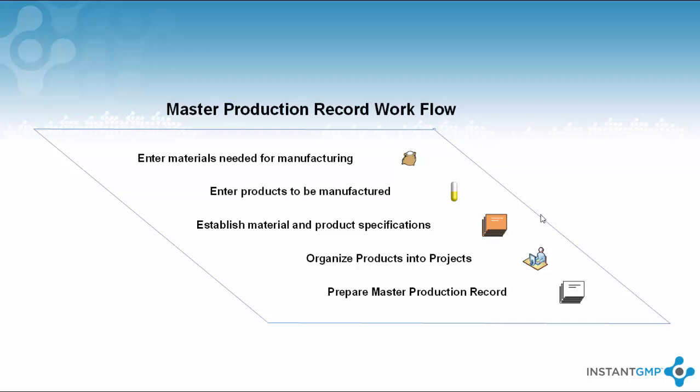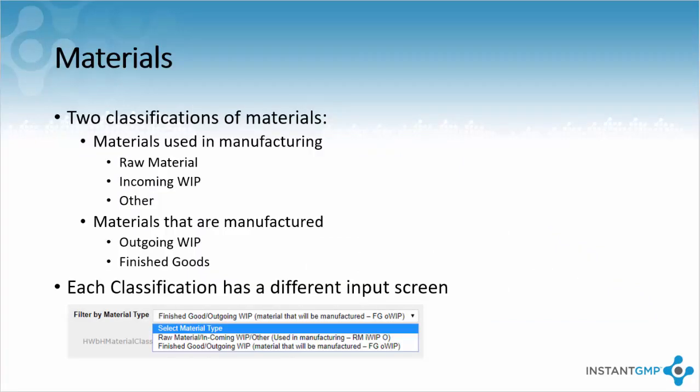Before a production process can begin, we need to define what types of materials are used or created during production. There are two classifications of materials within the Instant GMP software: those that are used in manufacturing, and those manufactured. Materials used in manufacturing are broken down into three subsections: raw materials, incoming works in process, or IWIPs, and other.